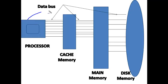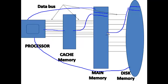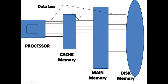An important thing to notice in this architecture is there is no direct connection from the processor to main memory or from the processor to disk memory. If the processor wants to access data present in main memory, that data must first be transferred from main memory to cache memory, and then the processor can access it from cache. Similarly, for disk memory, data must first transfer from disk to main memory, then from main memory to cache, and then the processor can access it from cache.